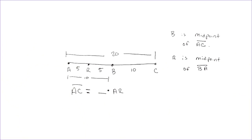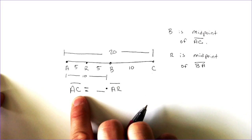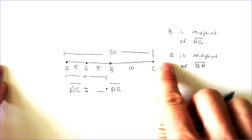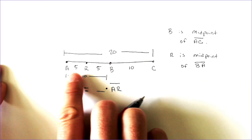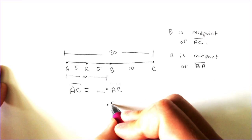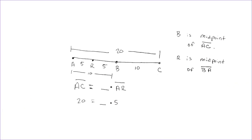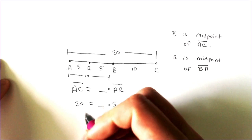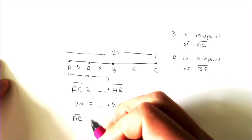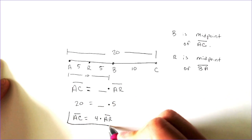Half of 10 is 5, so from A to R is 5, and from R to B is 5. Now we can interpret what we'd have to multiply segment AR by to get the full length of AC. AC is 20, and AR is 5. What do I have to multiply 5 by to equal 20? The answer is 4. So AC equals 4 times AR. That would be how it's represented abstractly.